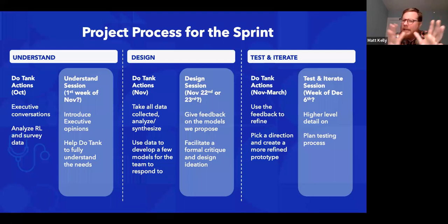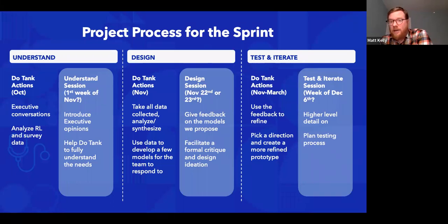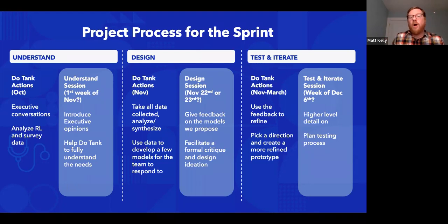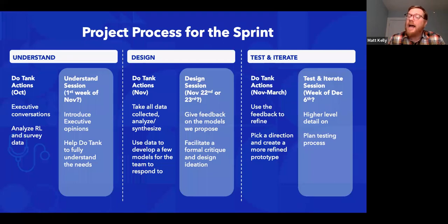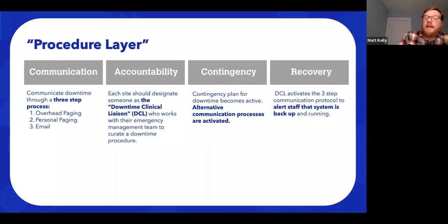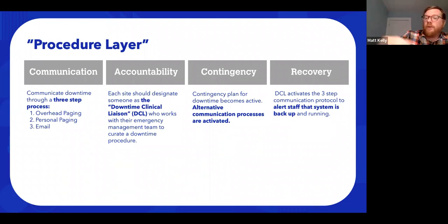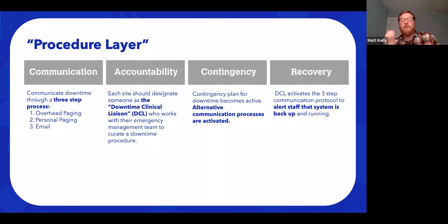What we did in this case: we realized we almost had to create a pretotype — what's the fundamental structure we need? Then we put in the content for all of them. This might be useful if any of you are working on process changes such as downtime procedures. There was a procedure layer: we need to have a plan around communications, who's going to be accountable. We learned that if everybody owns it, no one does.